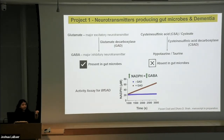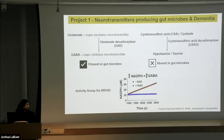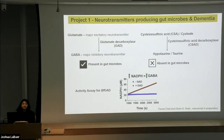So we isolated and purified the enzyme and characterized it. At the bottom, what you see is an activity assay of this protein, where in the absence of the protein we don't see formation of GABA, but in the presence of the protein we do see formation of GABA. So it tells us that this bacterial enzyme does make the neurotransmitter GABA.